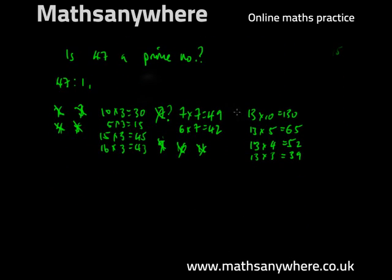So we can cross out 13 as a possible factor. 14 is in the 2 times table, so we don't need to worry about that. 15 is in the 5 times table, we don't need to worry about that. 16 in the 2. 17, so 3 times 17 is 51. We've gone past it, 17 times 2 is only 34, so we can discount 17.